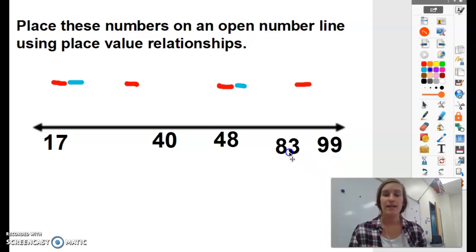So 83 belongs between 48 and 99. 83 is closer to 99 in value, so I'm going to put it a little bit closer to 99 rather than 48, okay?